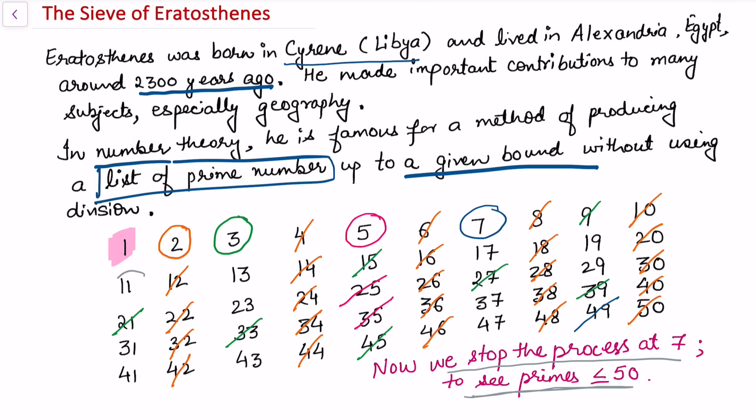Now circle all the numbers which are left out: 11, 13, 17, 19, 23, 29, 31, 37, 41, 43, and 47. These are now the prime numbers.